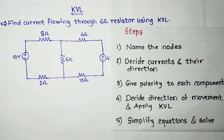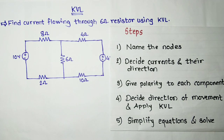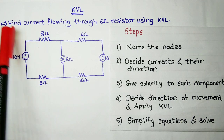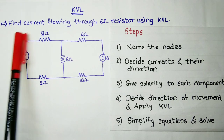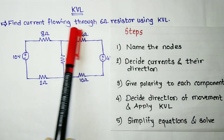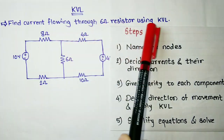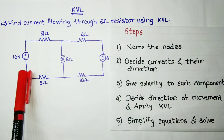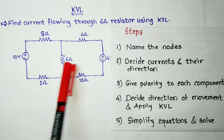Hello friends, welcome to our YouTube channel Electronics For You. In this video we are going to solve a simple example of Kirchhoff's Voltage Law. The example is: find the current flowing through a 6-ohm resistance using KVL.